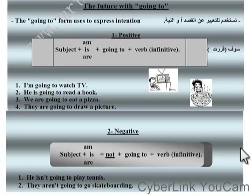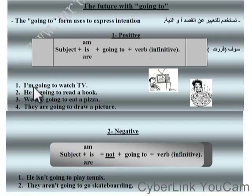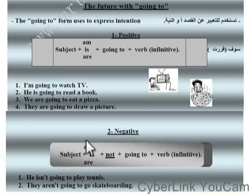Okay. We also have today: when talking about the future using present continuous, we use 'going to'. It comes as: subject + am/is/are + going to + verb in the infinitive. For example: 'I am going to watch TV.' That means I will watch TV — something you have decided to do in the future. For the negative: subject + am/is/are + not + going to + verb. For example: 'He isn't going to play tennis.'